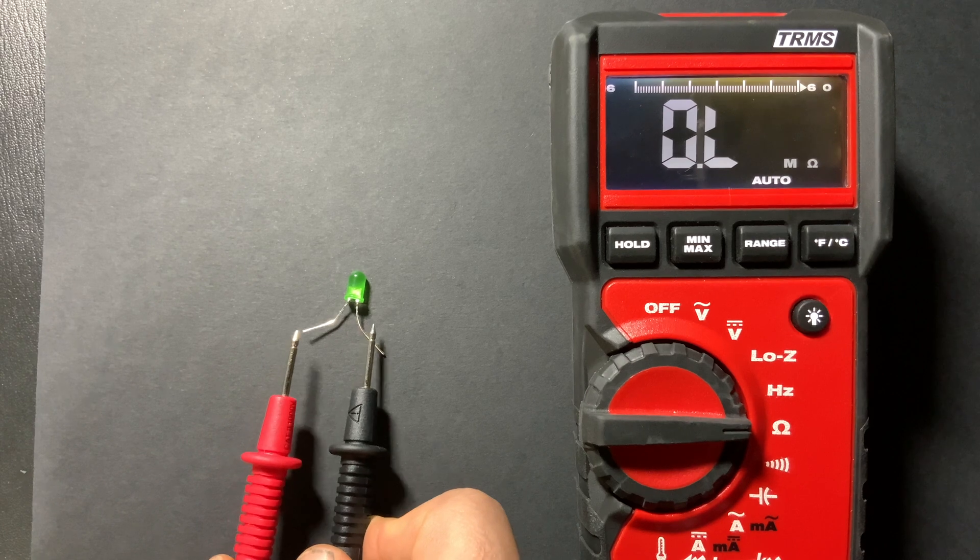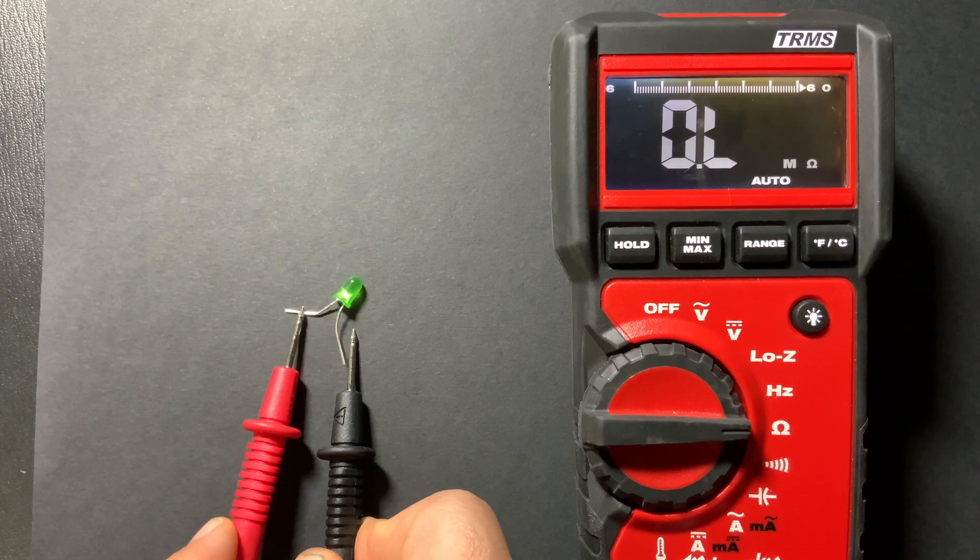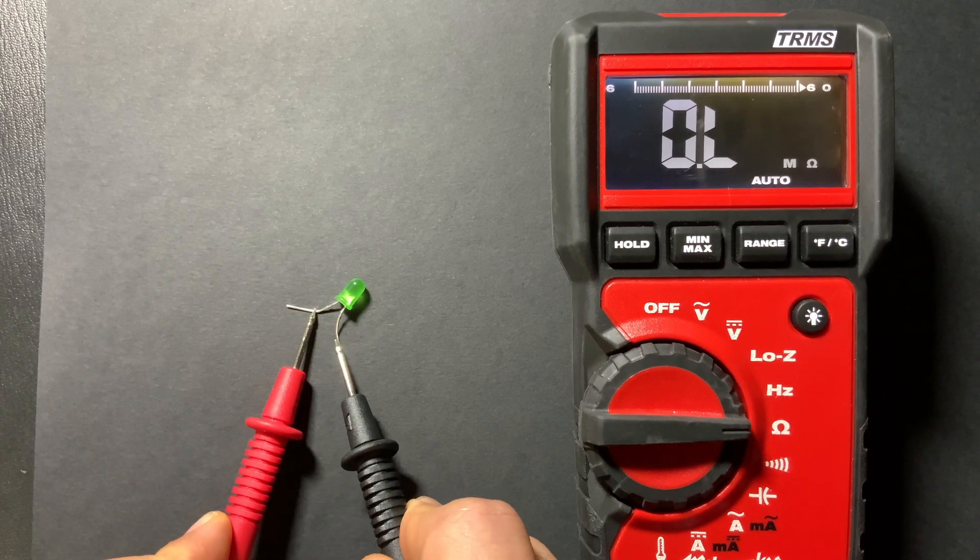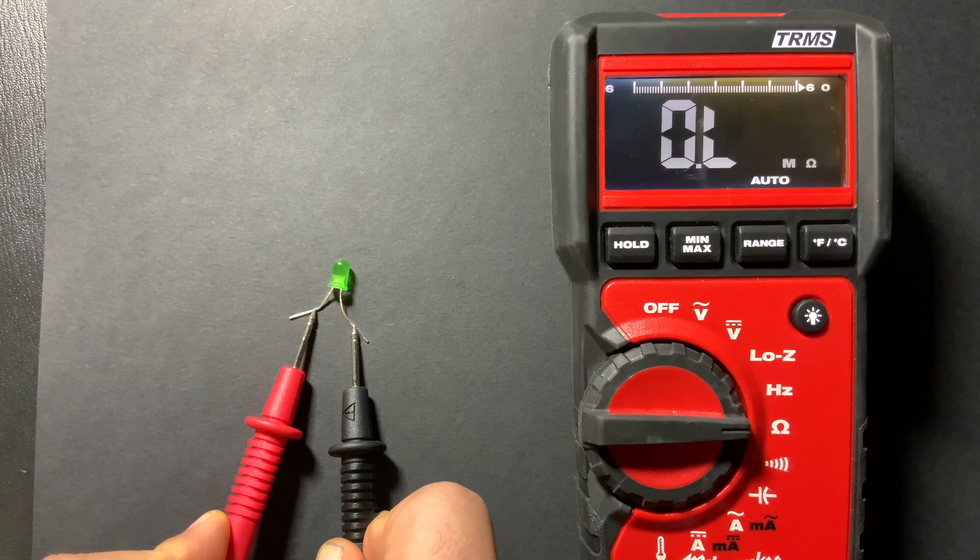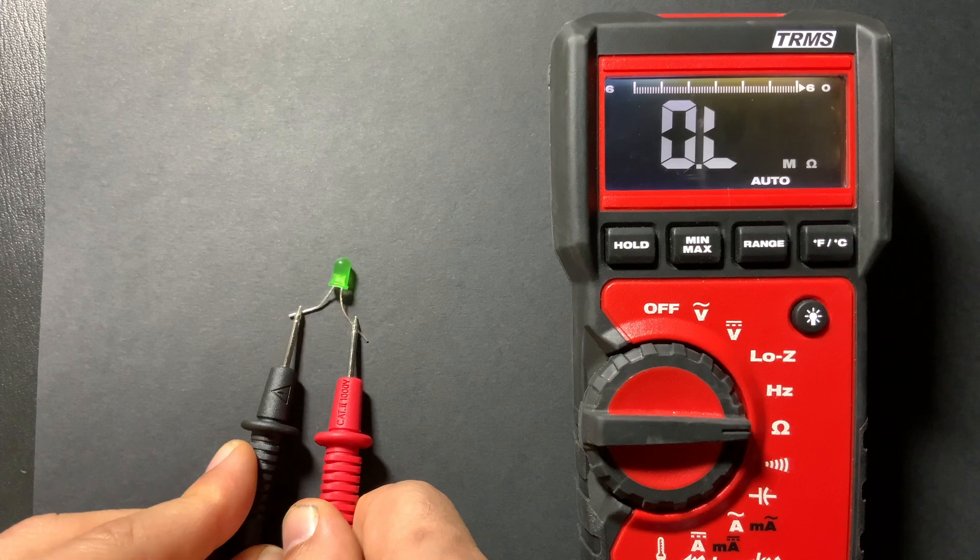Now with LEDs the resistance measurements aren't very consistent. So you'll see we can test the LED in both forward and reverse bias and we're not going to get any measurements. We're going to get open line for both.